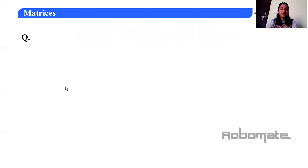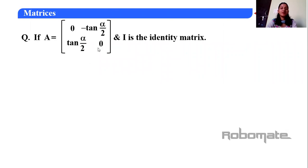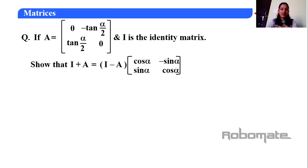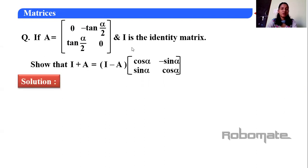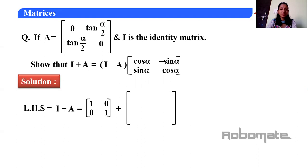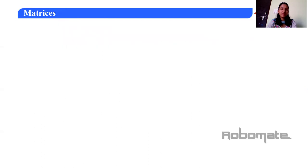Next question: if A = [0, −tan(α/2); tan(α/2), 0] and I is the identity matrix, show that (I+A) = (I−A)[cos α, −sin α; sin α, cos α]. Here I is a 2×2 identity matrix since A is 2×2. So I+A = [1, −tan(α/2); tan(α/2), 1] and I−A = [1, tan(α/2); −tan(α/2), 1].